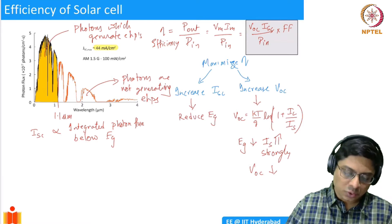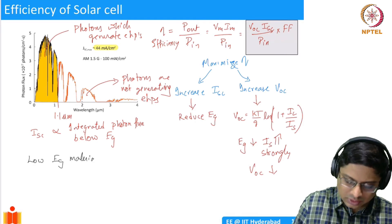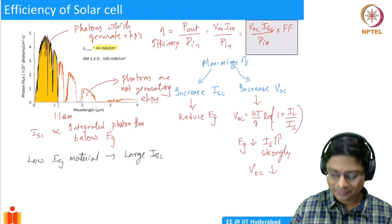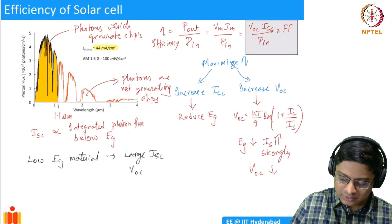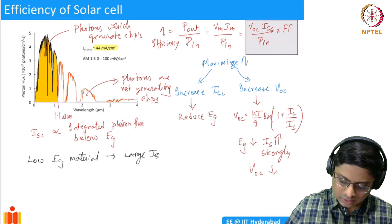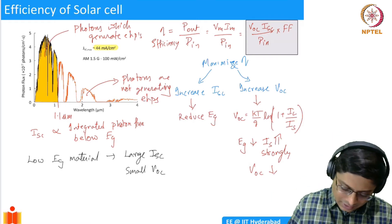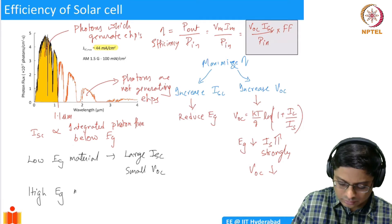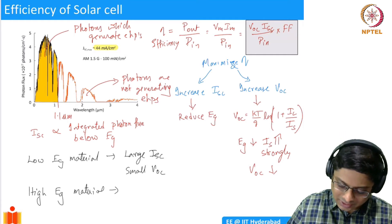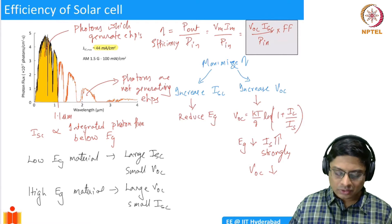In an extreme case, if we choose a low Eg material, we get a large Isc because all photons generate electron-hole pairs, but Voc will be small. On the other hand, if we choose a high Eg material, IS will be small, giving a large Voc but a small Isc. So neither extreme is good for us.